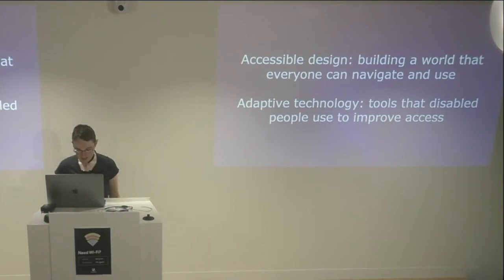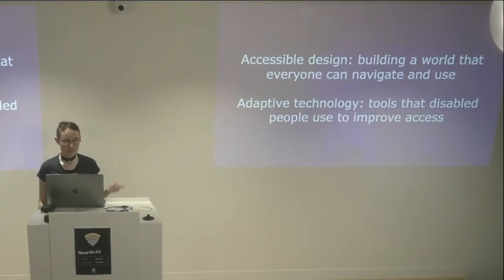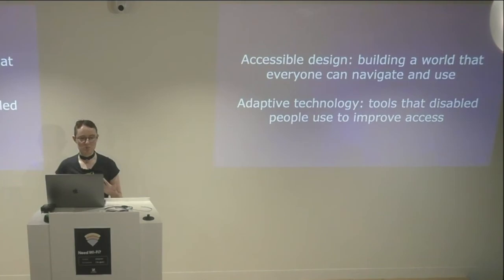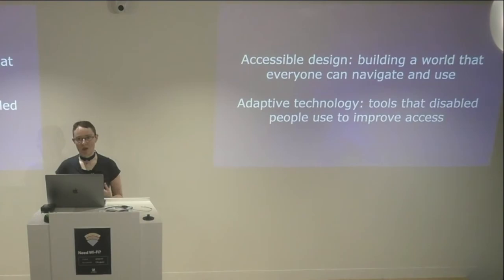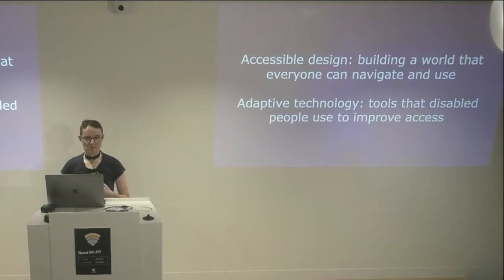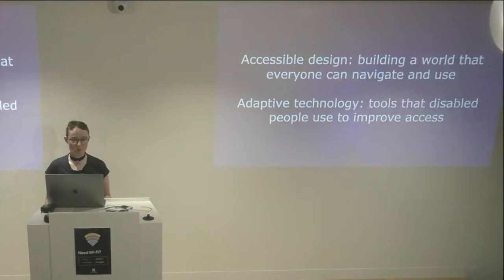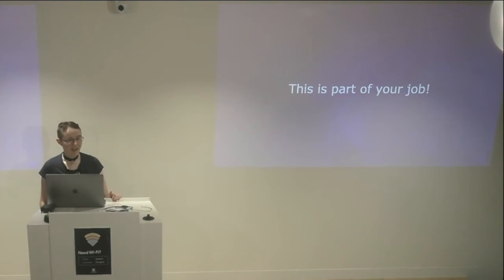Accessible design is basically about building a world that everyone can navigate and use — and as I said before, that's not just about disability. If you have an AI that doesn't recognize black people's faces, that's not an especially accessible piece of design. Adaptive technology are tools that disabled people use to improve access. That can be very low-tech — my walking stick is a piece of adaptive technology. Other examples include alternative and augmentative communication devices, and wheelchairs. Adaptive technology encompasses a lot, and it's something you'll run into a lot when designing for accessibility.